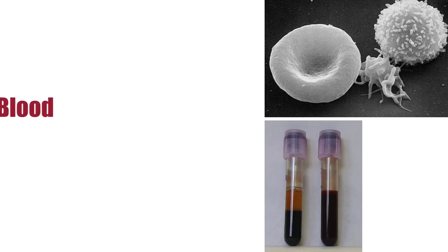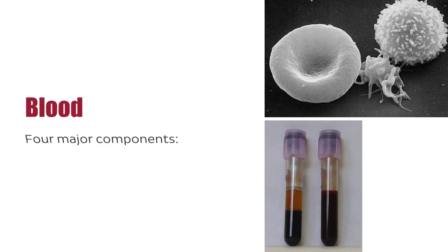The blood is made up of four major components. The plasma is the fluid that surrounds the blood cells and helps transport carbon dioxide, hormones, and metabolic waste products.